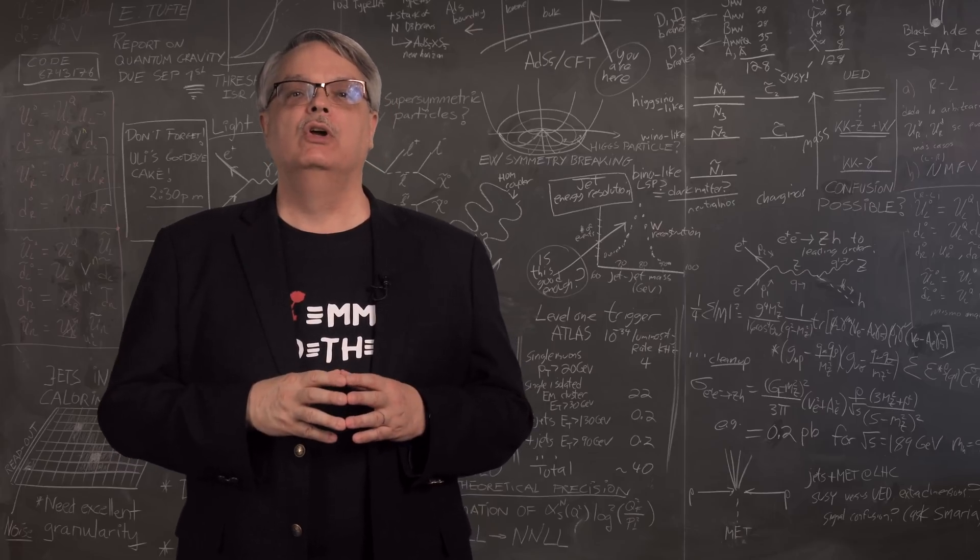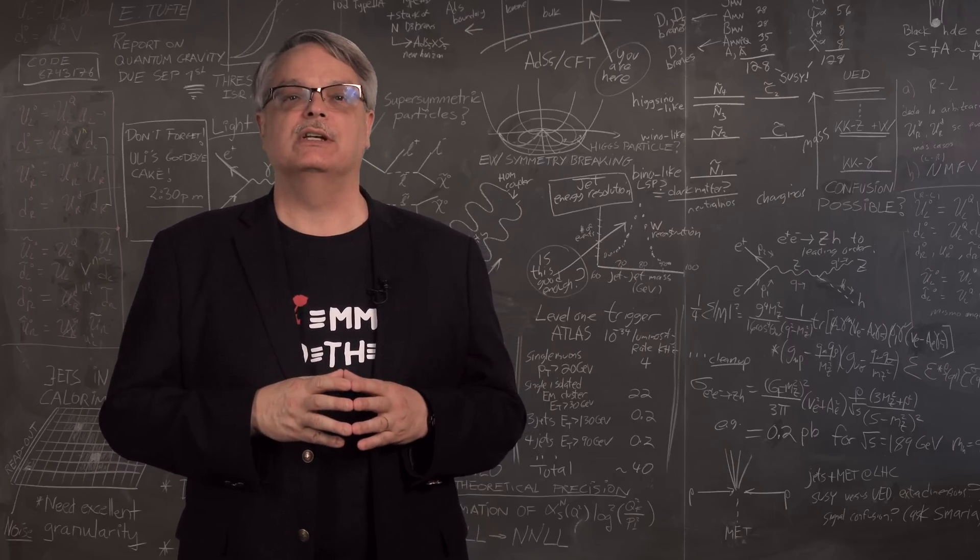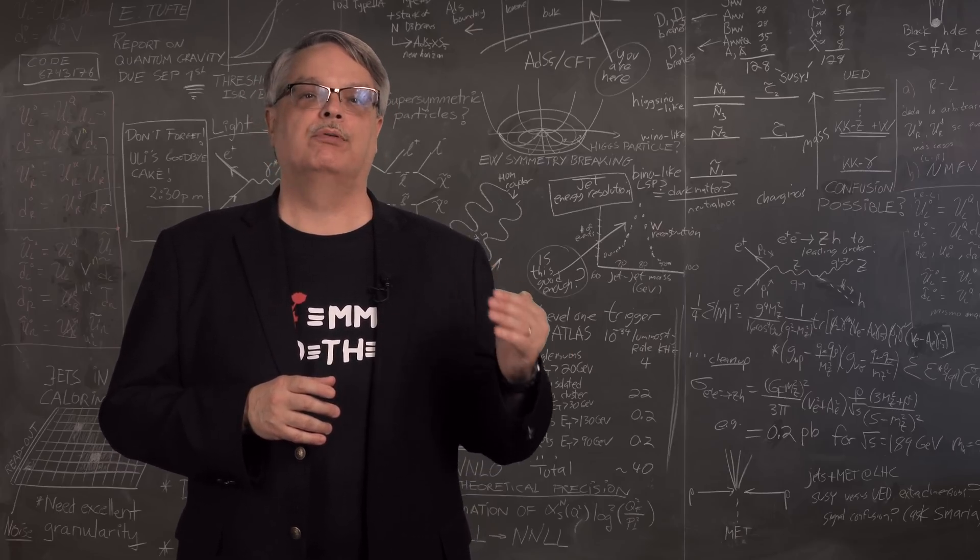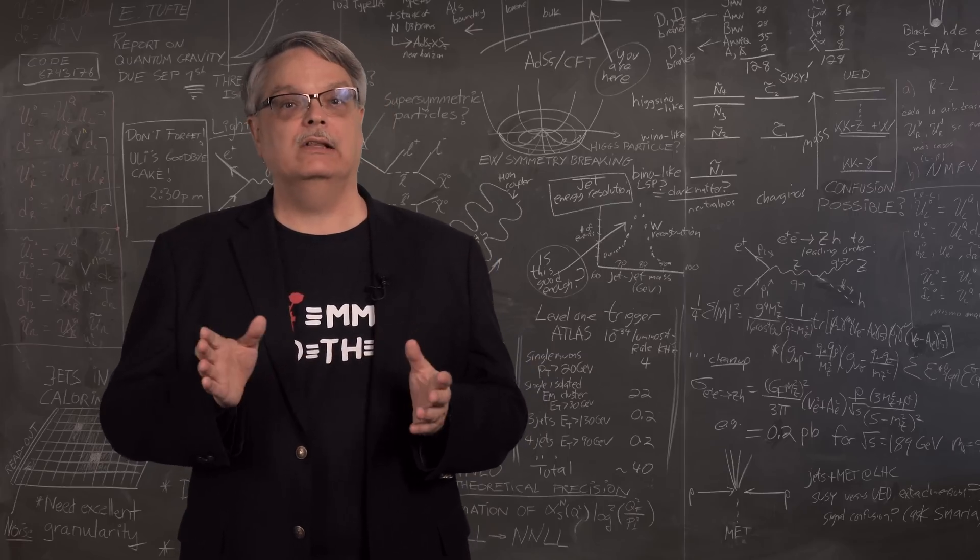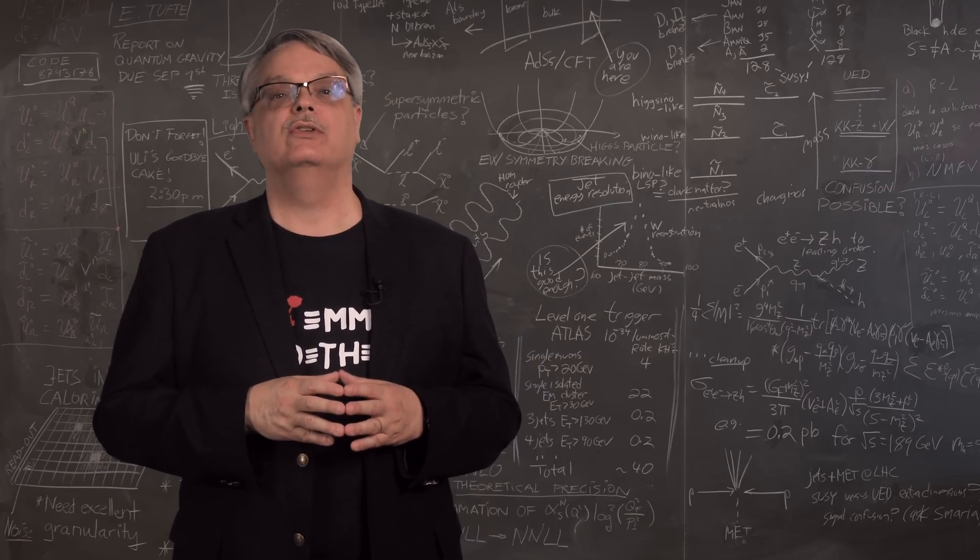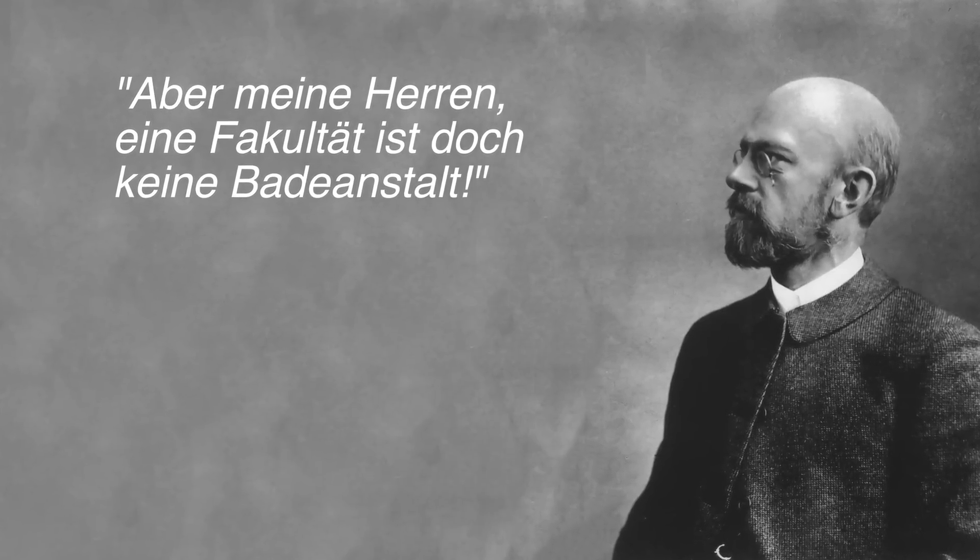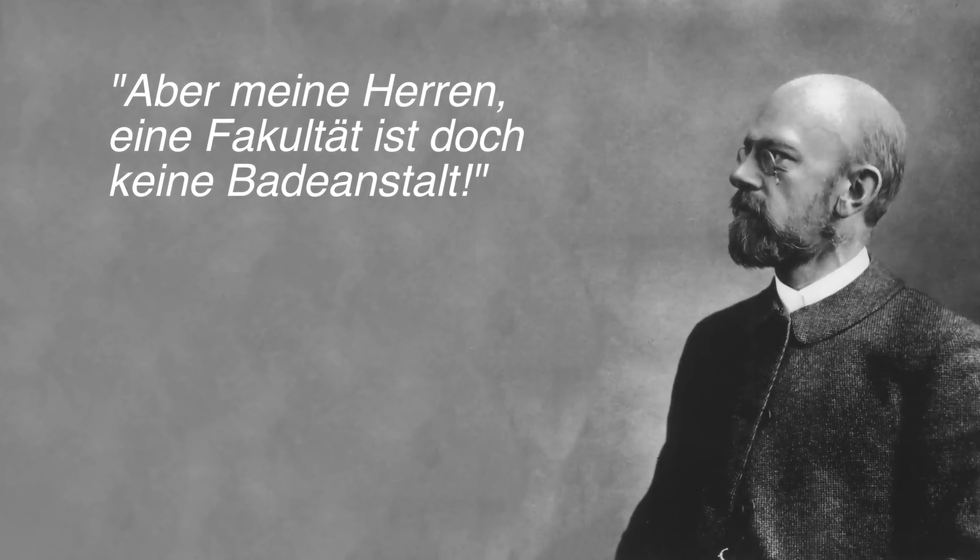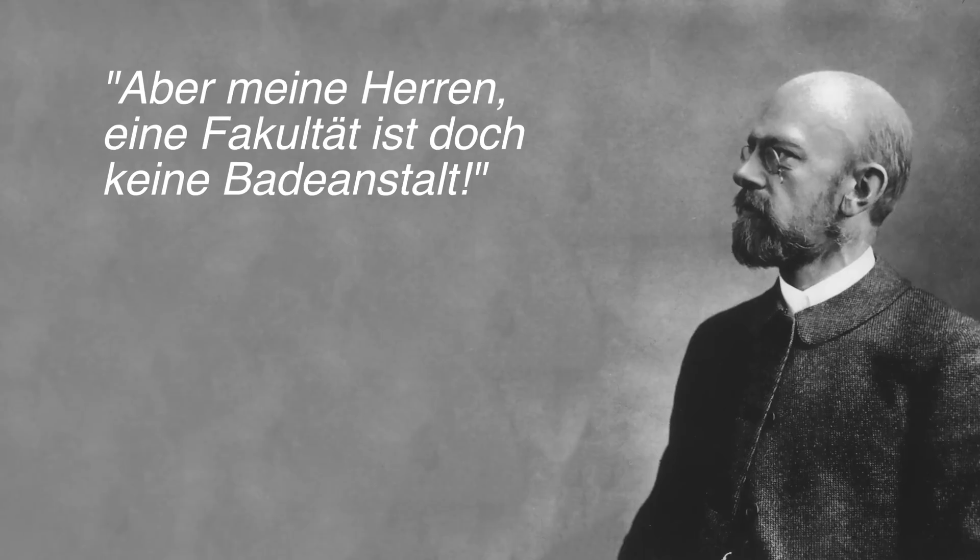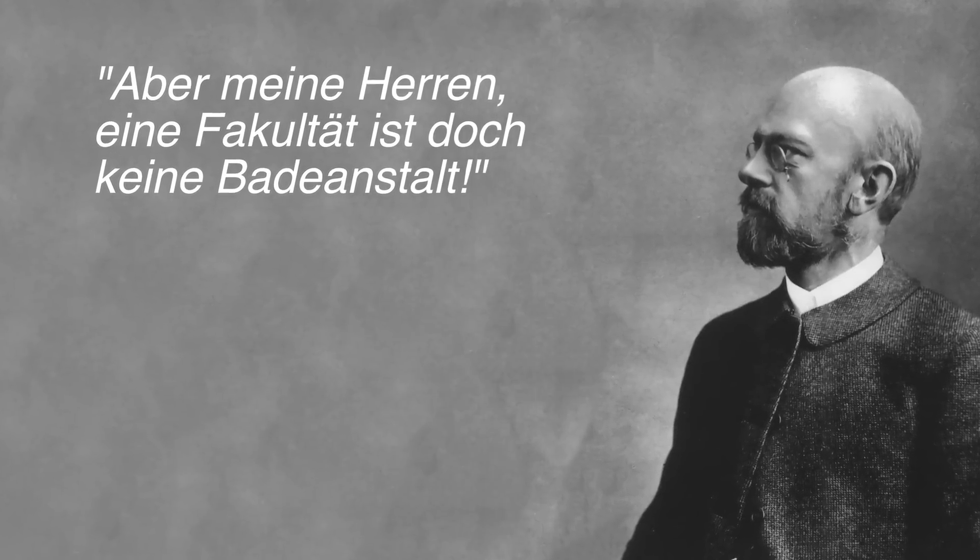David Hilbert, who was a famous mathematician at the time, wanted Noether to be given the rank of private dozent, which would entitle her to be paid to teach at the university level. When some of his colleagues objected on the basis of her gender, he responded by saying roughly, we should invite her to join. This is a faculty, not a locker room.